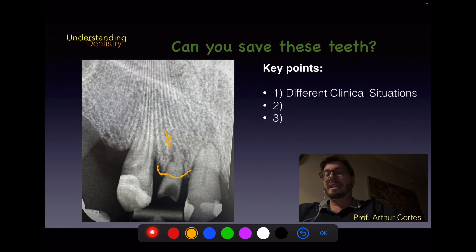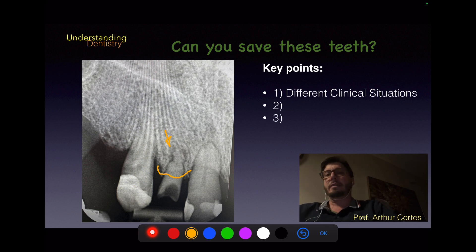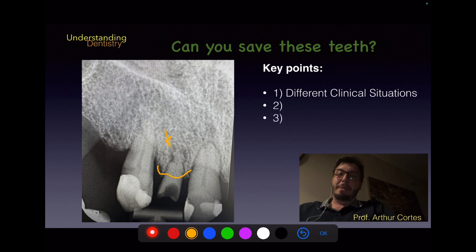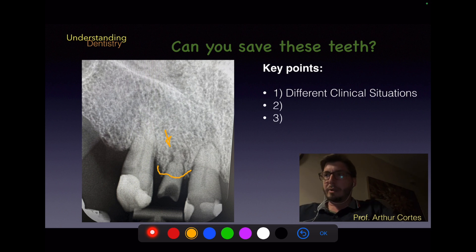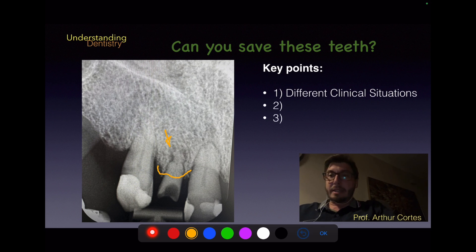Even if a good endodontic treatment were achieved and a post placed, the root dimensions and bone level make the predictability of this tooth very poor. This tooth should be extracted — that is the most predictable treatment. My decisions reflect different accepted approaches, as long as we follow an evidence-based approach using referenced articles and textbooks.